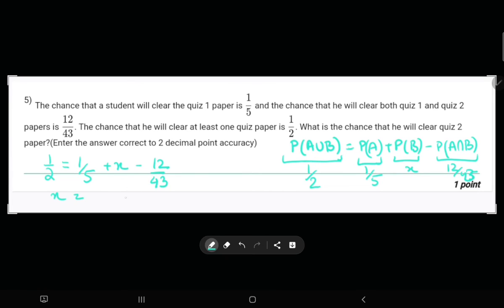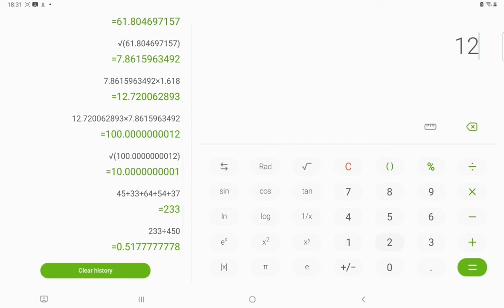X equals 1 by 2 plus 12 by 43 minus 1 by 5. That's 0.5 minus 0.25 plus 12 by 43. What is 12 by 43? 12 divided by 43 equals 0.297.